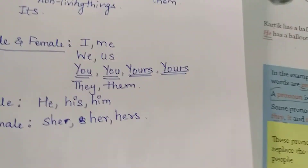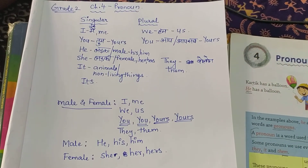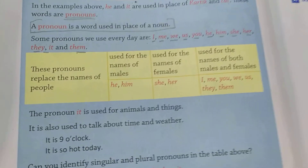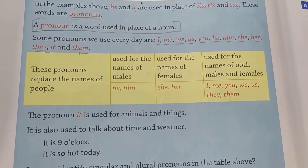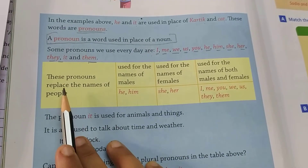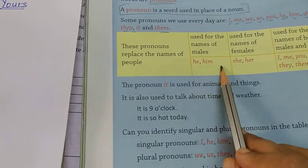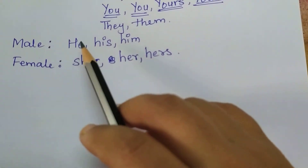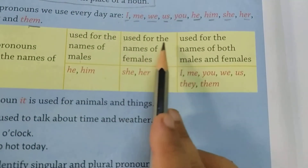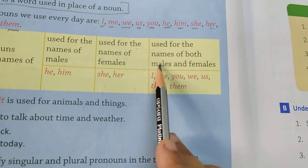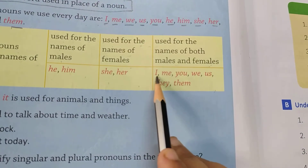Okay, hope this is clear. Pronouns replace the name of a person. For males we use he, his, him. For females we use she, her, hers. But some pronouns are used for both male and female: I, me, you, we, us, they, them.